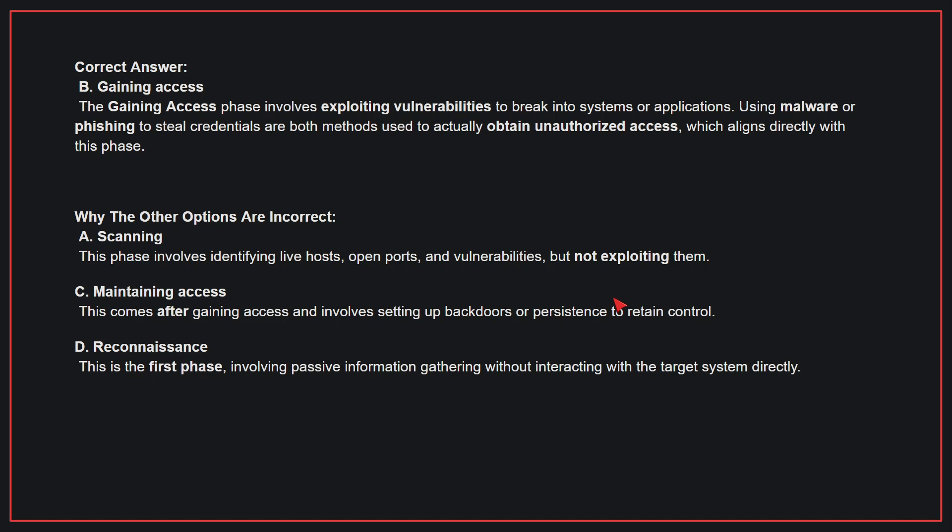Why the other options are incorrect: A — Scanning. This phase involves identifying live hosts, open ports, and vulnerabilities, but not exploiting them. B — Maintaining access. This comes after gaining access and involves setting up backdoors or persistence to retain control. D — Reconnaissance. This is the first phase, involving passive information gathering without interacting with the target system directly. Therefore, the correct answer is B.